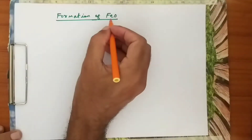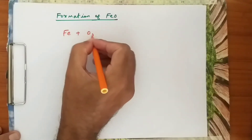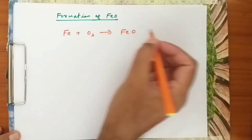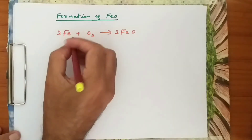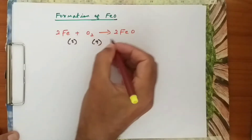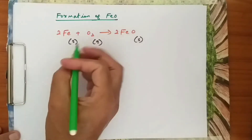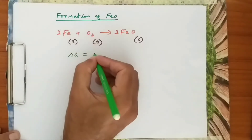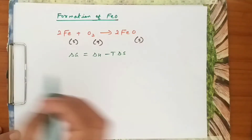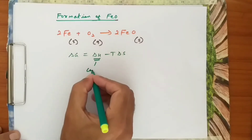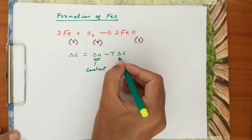Let us take the formation of FeO: 2Fe + O₂ → 2FeO. Here Fe is solid, oxygen is gas, and FeO is solid. The equation is ΔG = ΔH − TΔS, where ΔH is a constant. We need to find ΔS, which equals the number of gaseous moles in the products minus the number of gaseous moles in the reactants.